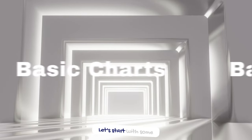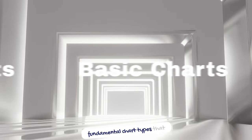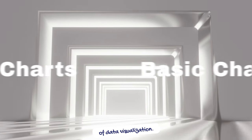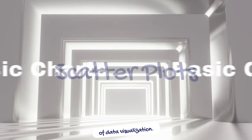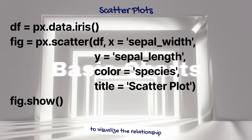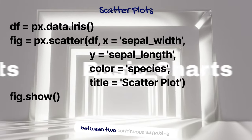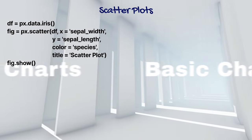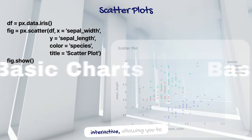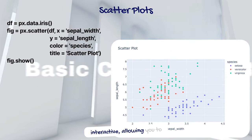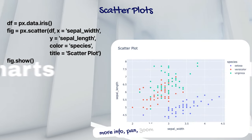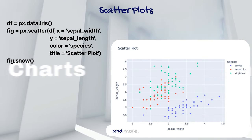Let's start with some fundamental chart types that form the building blocks of data visualization. Scatter plots are used to visualize the relationship between two continuous variables. The resulting plot is interactive, allowing you to hover over points for more info, pan, zoom, and more.